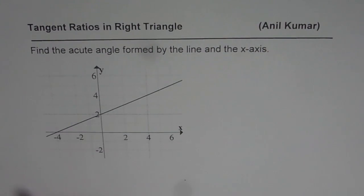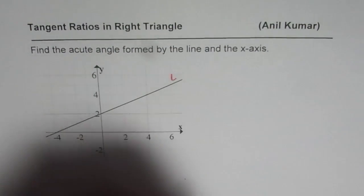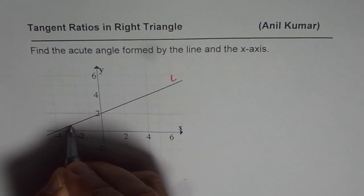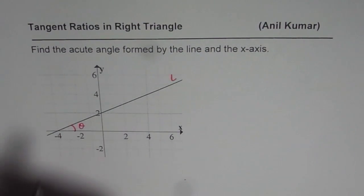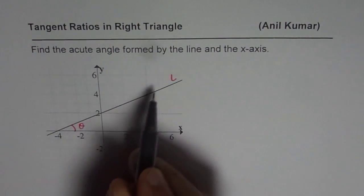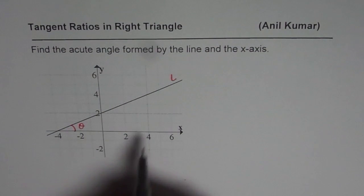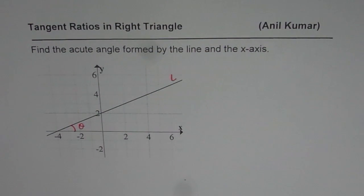So, we are given a line here, that's the line L, and we need to find the acute angle, that means this angle, let's call this angle theta. So, we need to find this angle, which the line makes with the x-axis. That is the basic question.